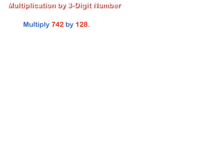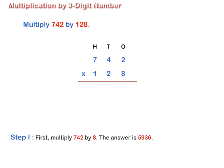Multiply 742 by 128. Arrange the numbers as shown on screen. Step 1: Multiplying 742 by 8, we get 5,936.